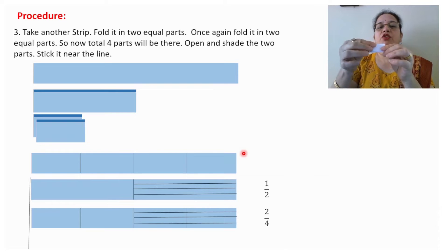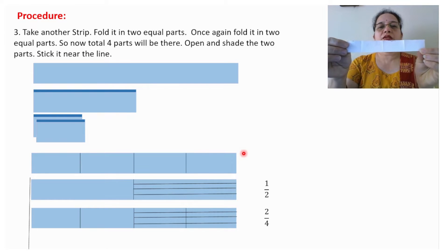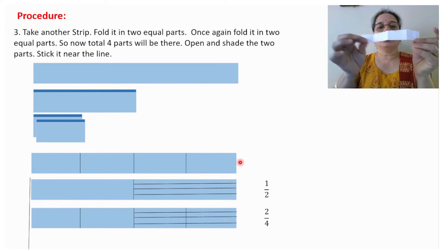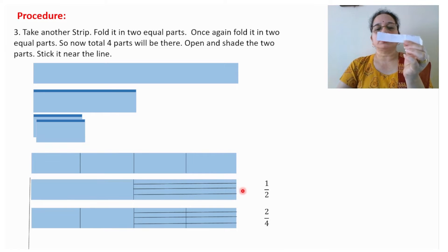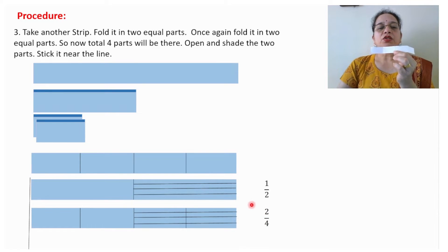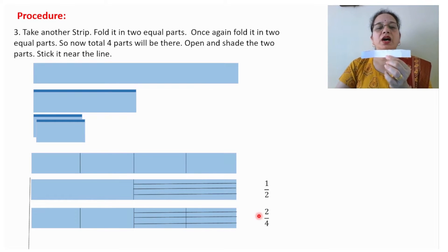For four parts: once again take the folded strip, fold it again, open it and make the crease. You can see here four parts. Now you need to shade two parts out of four. So this is the first strip that we have stuck — out of two parts one part is shaded, and out of four parts two parts are shaded.